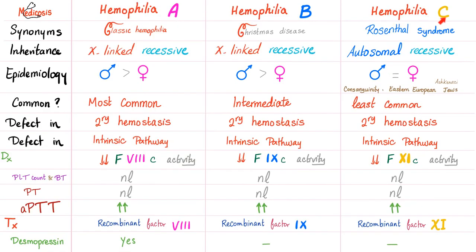Let's compare the three diseases in this table. Hemophilia A, B, and C. Synonyms: classic hemophilia, Christmas disease, and Rosenthal syndrome respectively. Inheritance: A and B are X-linked recessive, therefore boys more than girls; C is autosomal recessive — consanguinity applies. Regarding prevalence, hemophilia A is the most common by far and also the most severe.